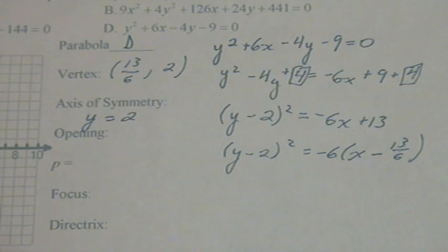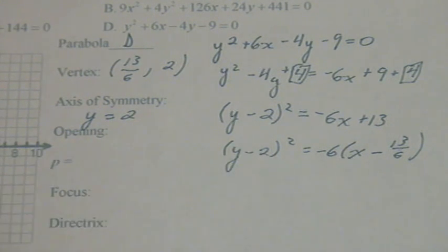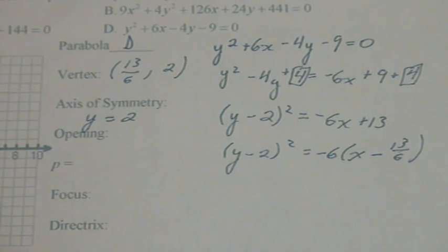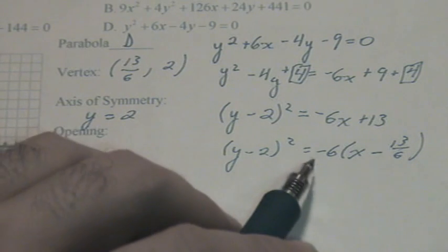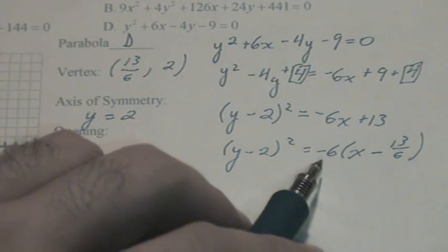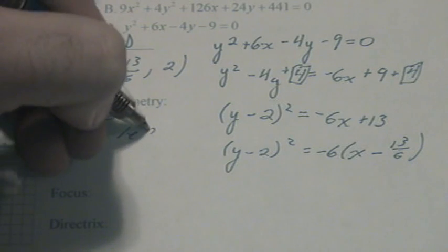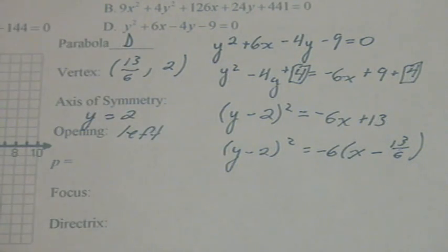The opening. Well, y is the variable being squared, so we know it's horizontal, and we have a negative number here. So the opening is to the left.